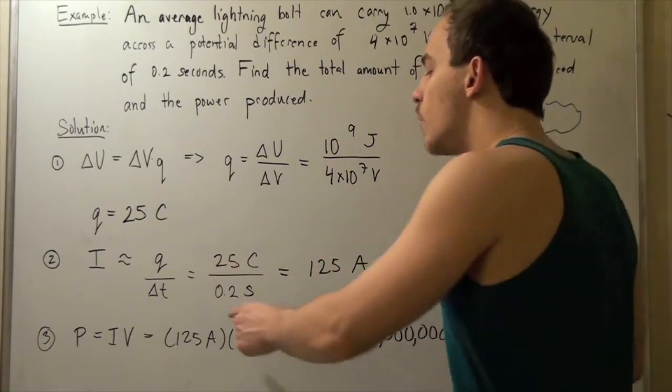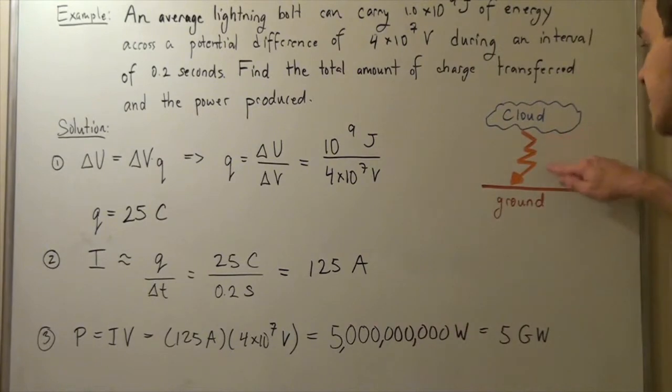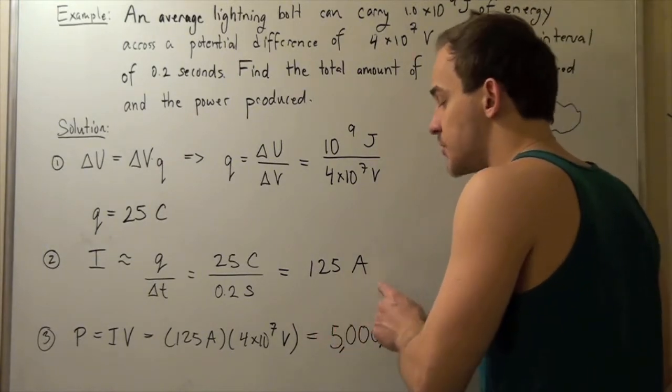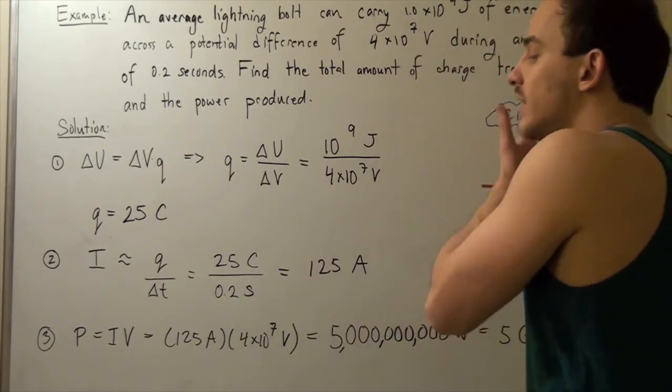So since we have 25 coulombs of charge, we divide that by 0.2 seconds. That's how much time it takes to travel this distance. And we get 125 amperes. This is the current of our lightning bolt, or in our lightning bolt.